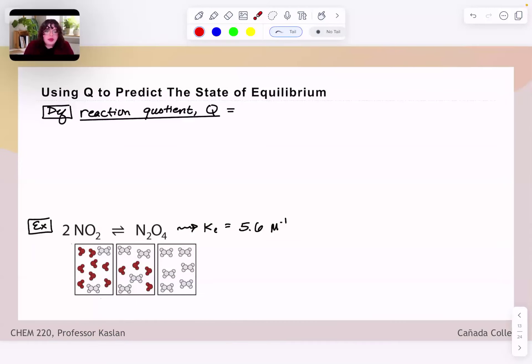So we have this new concept here, even though it's not going to feel very new when we talk about it. And it's this idea of the reaction quotient Q. Now, why is this not something that I think is going to be super novel to you?